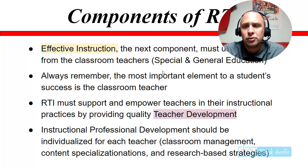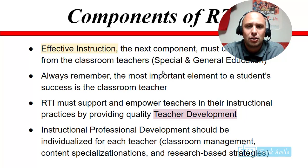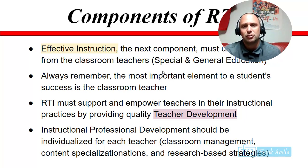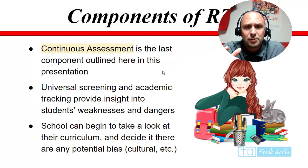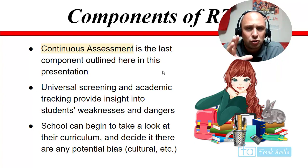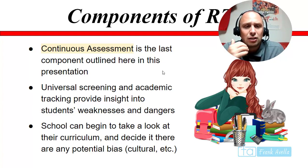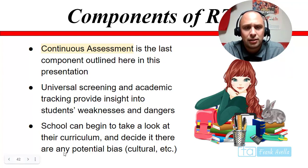RTI must support and empower teachers with quality professional development, ideally individualized to the teacher's needs — whether that's classroom management or finding good content activities. Continuous assessment is the last key component: universal screening and academic tracking provide insight into student weaknesses, and that's how we can identify students who may need special education. Schools can also examine the curriculum for any potential bias, remembering that schools should have a viable curriculum that engages all learners.